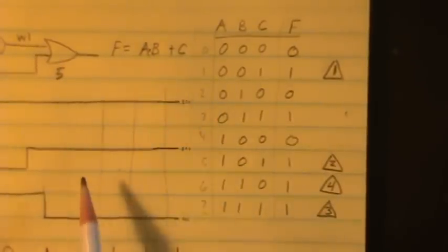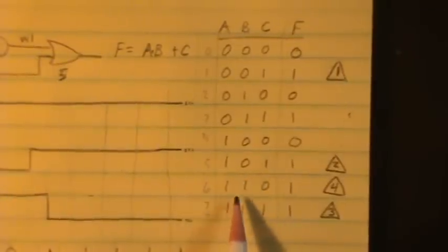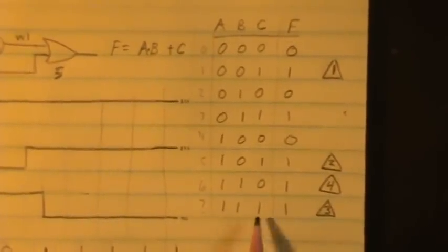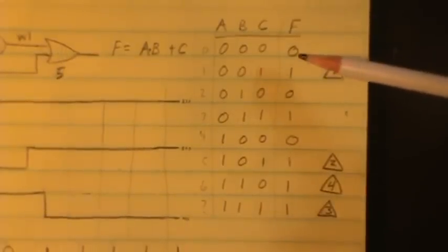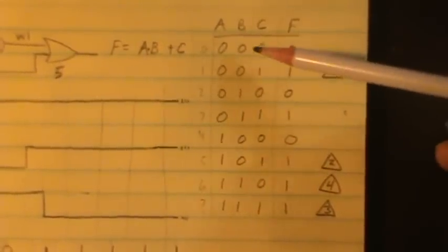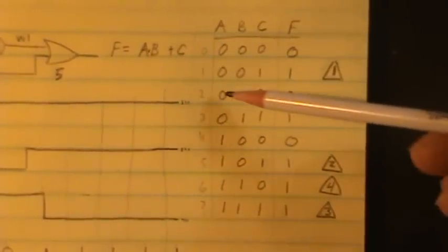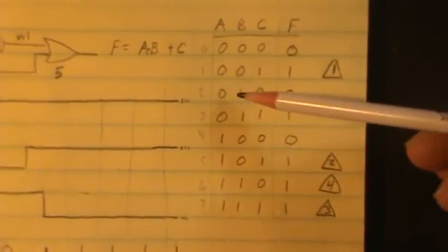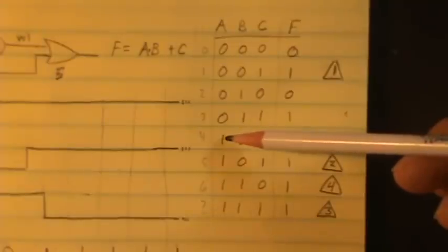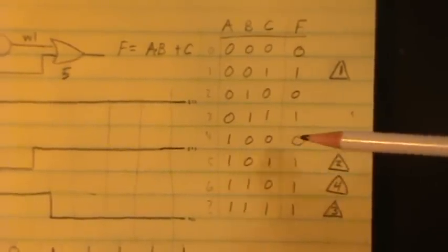If A and B are both 1's, then we get a 1, so that happens here and here. Triple zeros, nothing lights up, so we only have a 0 there. 0 and 1 and a 0 gives us a 0, because these two together ANDed makes a 0, OR 0 equals 0. Same thing there.